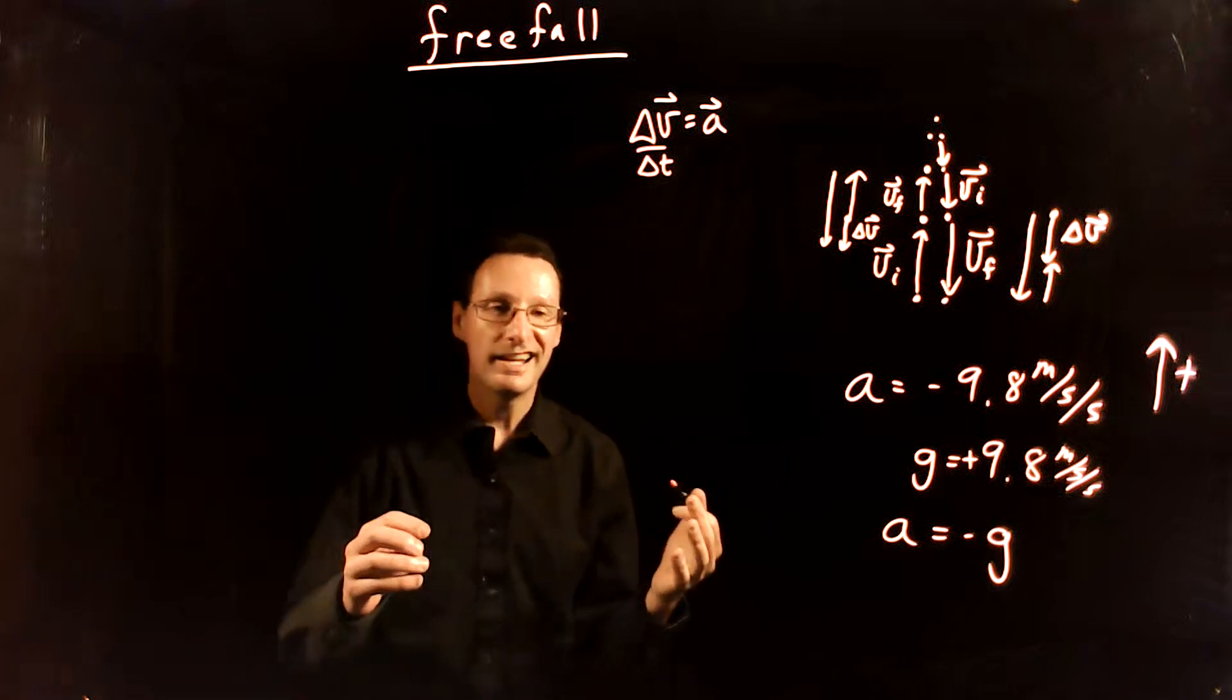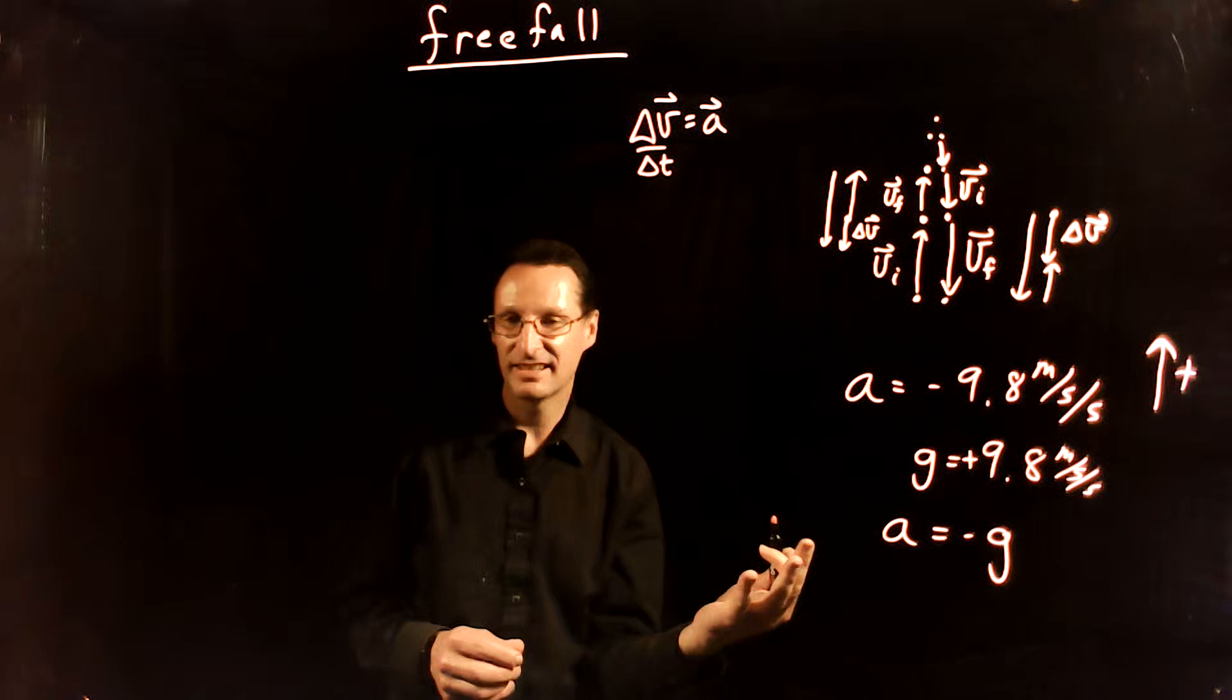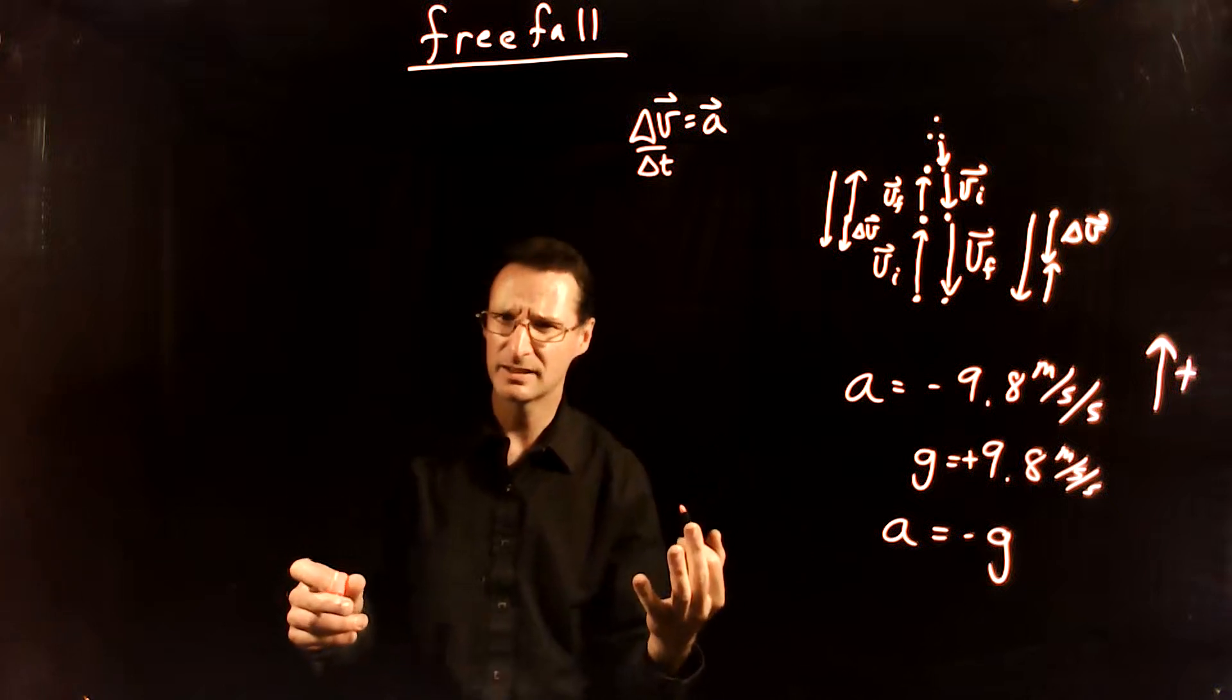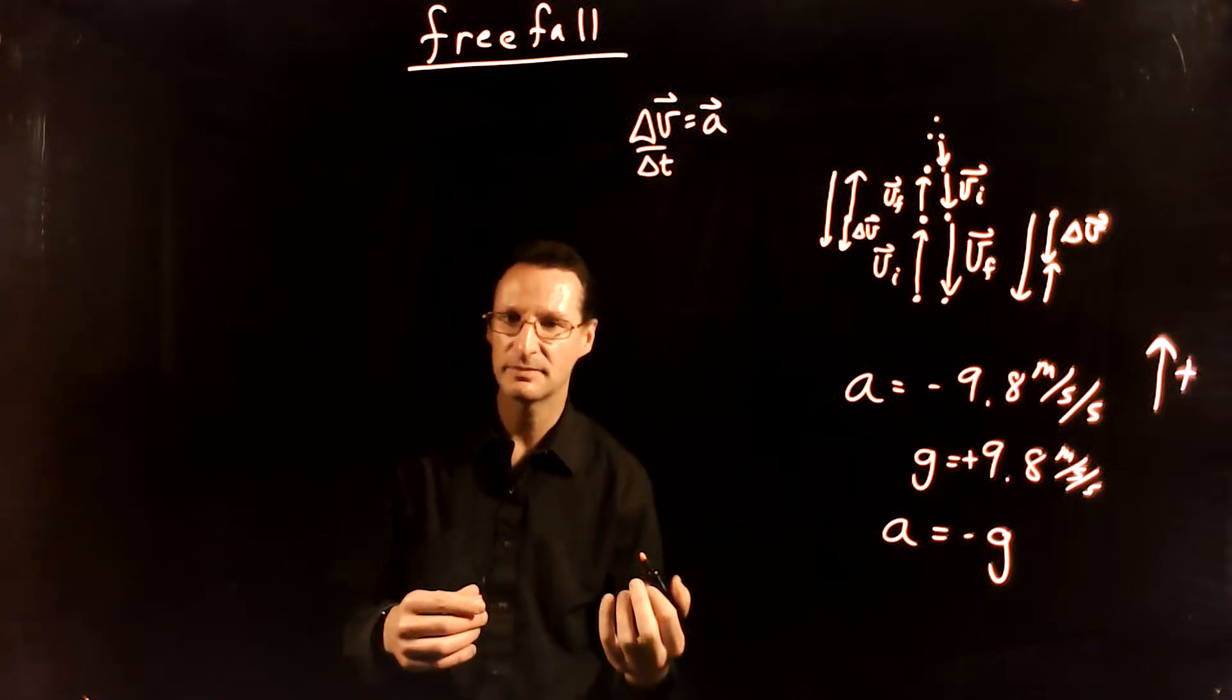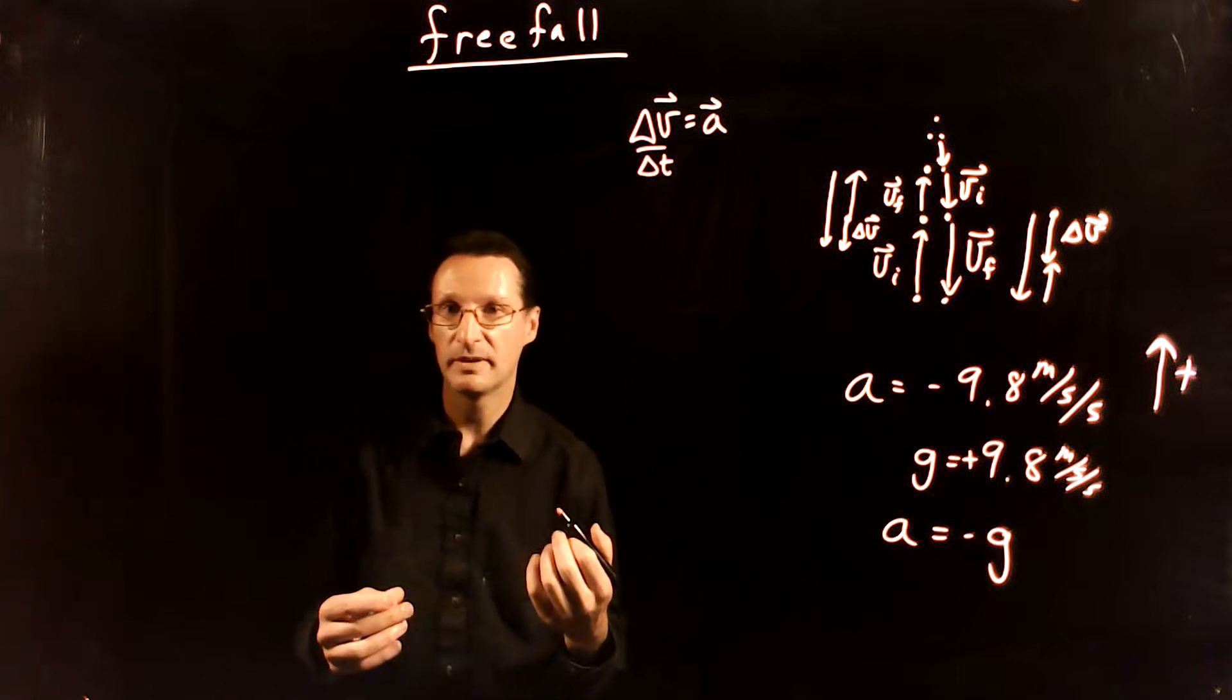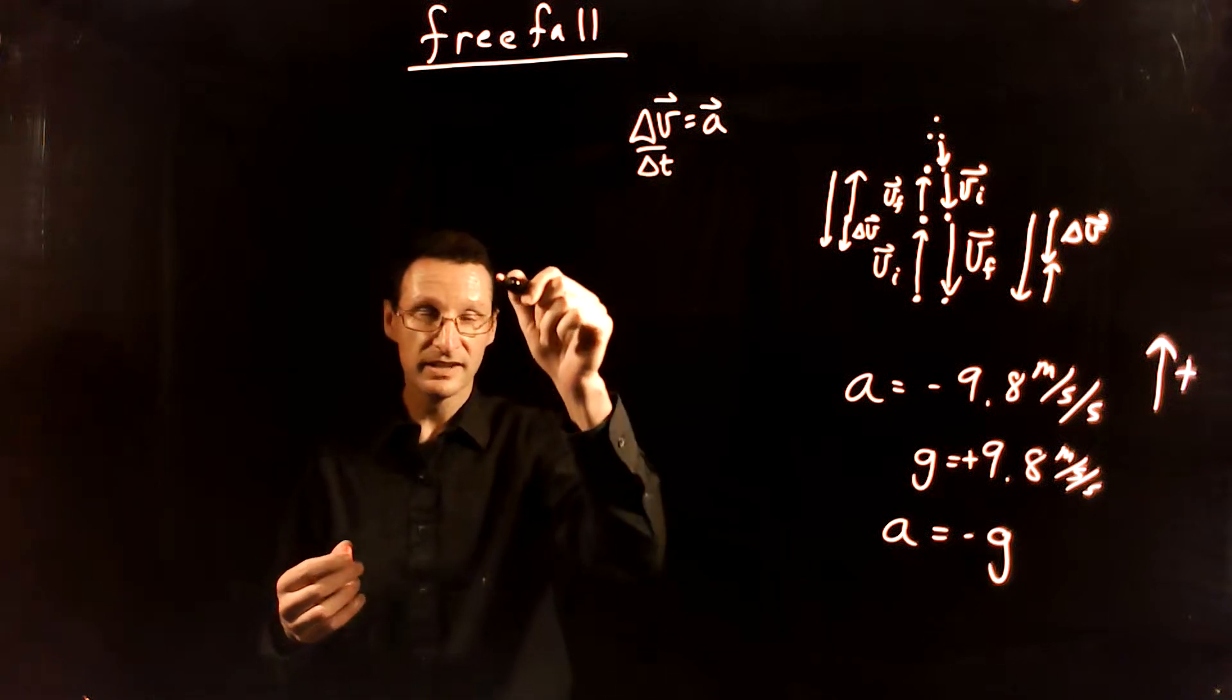Now, an interesting thing is, this seems like it's telling us that all objects fall with the same acceleration. But isn't that wrong? Don't some more massive objects fall at a faster rate than less massive objects? Well, we can go through a quick thought experiment to examine the properties or the consequences of this idea. So let's do that.